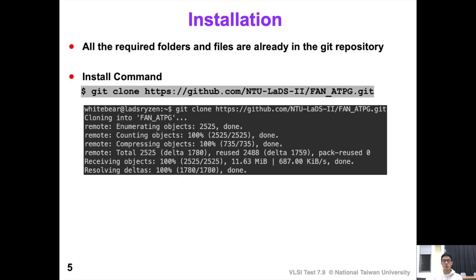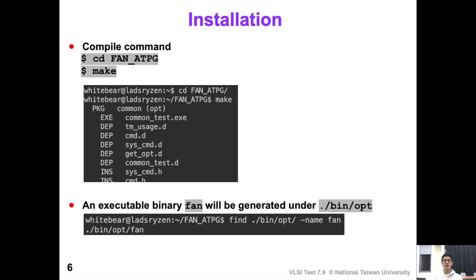After you have your prerequisites installed, you can git clone the repository from GitHub. Note that all the required folders and files are already in the GitHub repository. After cloning, type make under the project folder to compile. An executable binary named FAN should be generated under the folder bin/opt. To check the compilation, type: find bin/opt/ -name FAN.